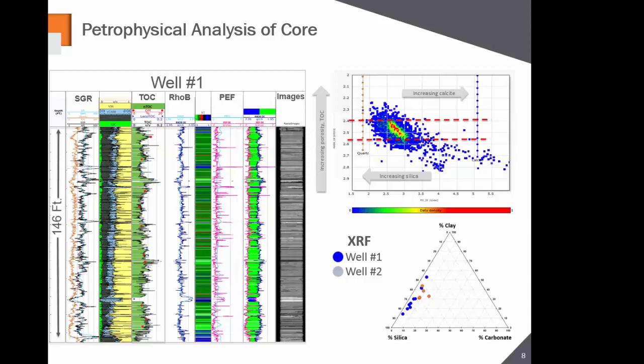On the left I'm showing you spectral gamma — thorium, potassium, and uranium concentrations through the section. One of the interesting things about the Springer is it has a very depressed thorium reading, and even the uranium reading can be a little bit low. As you head down to the Woodford, you see a little kick and some shows in this section, but then a little further you hit the Woodford and it's a big kick — it sticks out. The Woodford is a world-class self-sourcing shale. The Springer is a thinner section that doesn't have that high API count, but production has been quite remarkable.